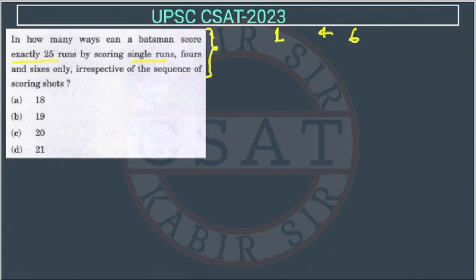This was a level two kind of question. So see he is scoring 25 runs. We don't know how many ones he is scoring. Let's suppose he is scoring ones a number of times, and he is scoring 4s - how many? We don't know that. So we are assuming that number is b, and how many 6s he is scoring? That is c.